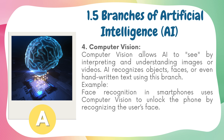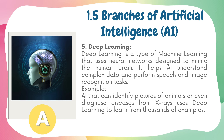Computer Vision allows AI to 'see' by interpreting and understanding images or videos. AI recognizes objects, faces, or even handwritten text using this branch. Example: face recognition in smartphones uses computer vision to unlock the phone by recognizing the user's face. Deep Learning is a type of machine learning that uses neural networks designed to mimic the human brain. It helps AI understand complex data and perform speech and image recognition tasks. Example: AI that can identify pictures of animals or diagnose diseases from X-rays uses deep learning to learn from thousands of examples.